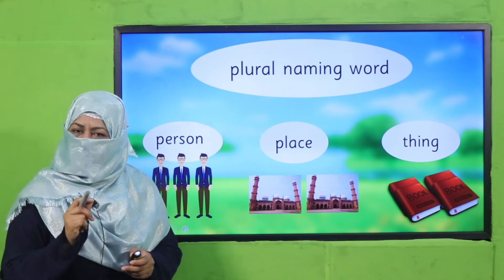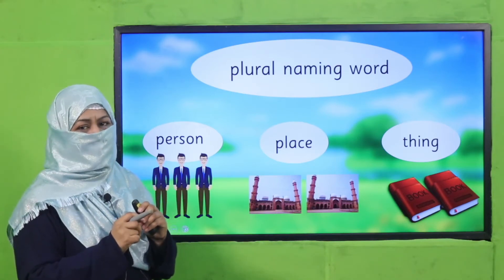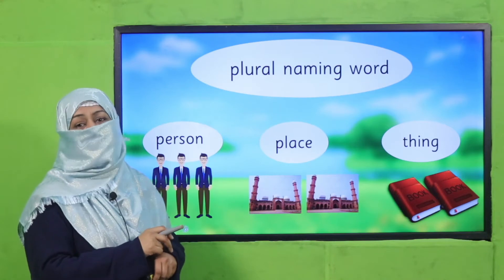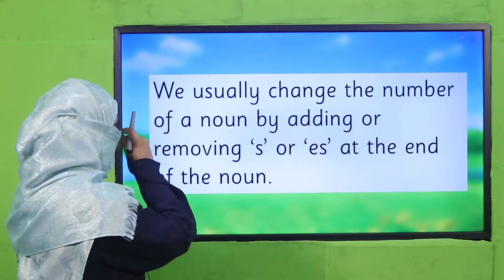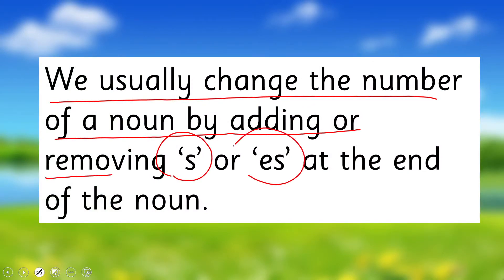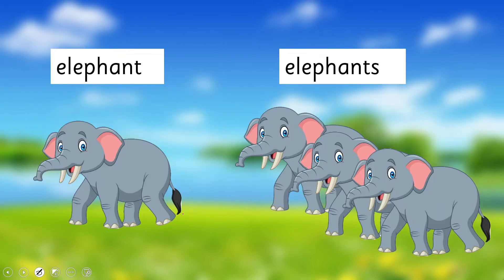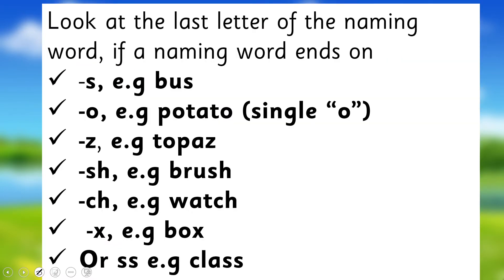When writing, if you want to mention more than one person, the naming word you use should be plural. When you are writing about one, it should be singular. This is why we need to learn about singular and plural nouns. We usually change the number of a noun by adding or removing -s or -es at the end. For example, 'elephant' refers to one elephant; to mention more than one, we add -s and it becomes plural, meaning more than one.